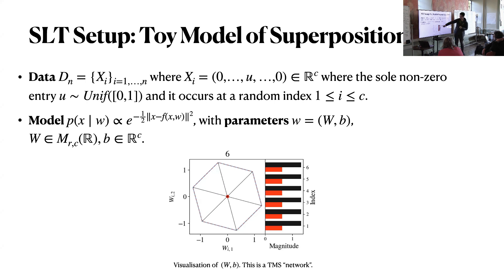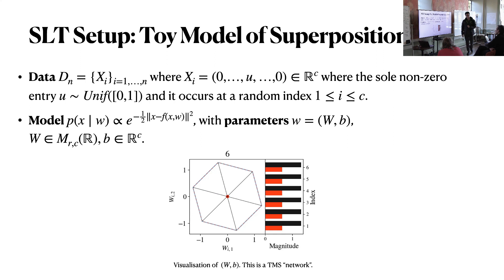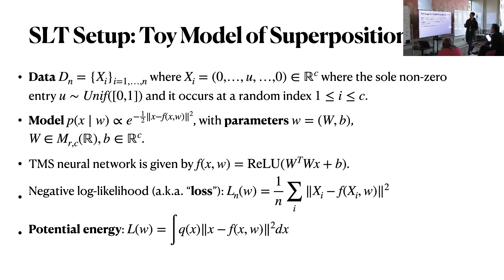We visualize those vectors as a polygon. The bias B is visualized as a bar chart on the right-hand side. In this model the sign of B matters because of ReLU — if you add a very negative B, you go to zero. Negative bias is going to be represented in red. The other very important object in SLT is the potential energy.